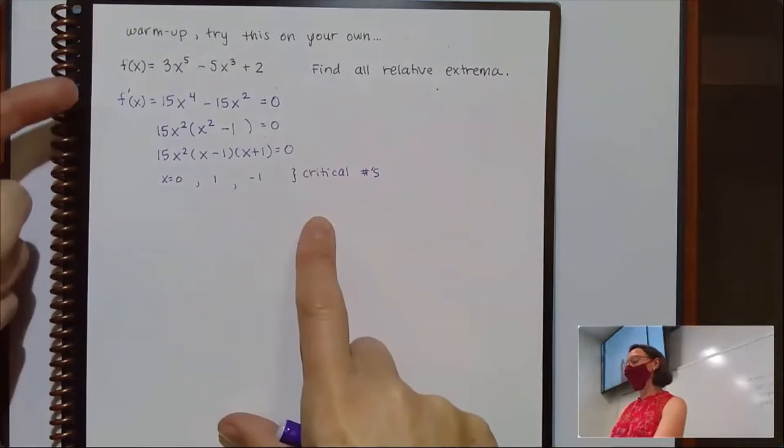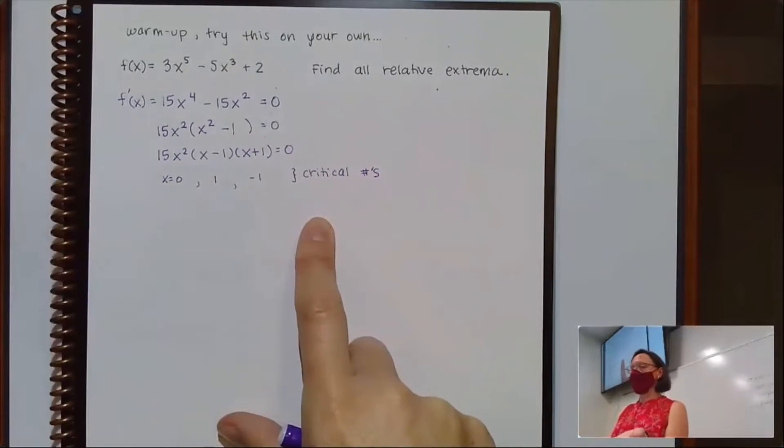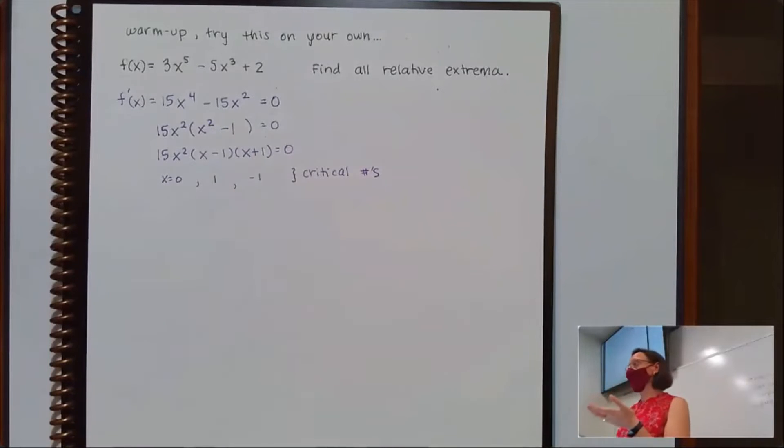They're critical points as long as they're within the domain of the function. So then I could go back and check, nothing's going to go wrong domain-wise with my function. So they're critical numbers, which means they're x values that could lead me to critical points.